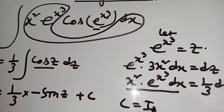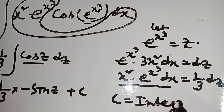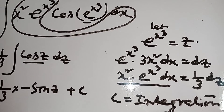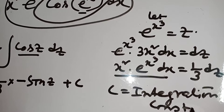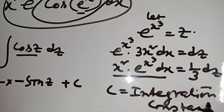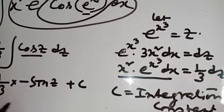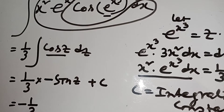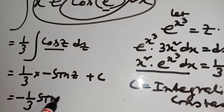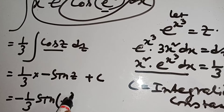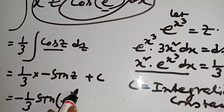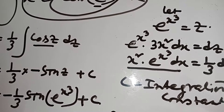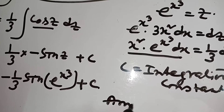c is the integration constant. Now putting the value of z, that gives minus 1 by 3 sin into e to the power x cube plus c. This is the answer.